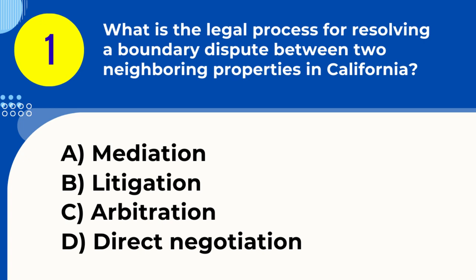Question 1. What is the legal process for resolving a boundary dispute between two neighboring properties in California? A. Mediation B. Litigation C. Arbitration D. Direct negotiation. Answer: B. Litigation. Explanation: In California, boundary disputes between neighboring properties are typically resolved through litigation, where the court determines the legal boundary based on evidence.